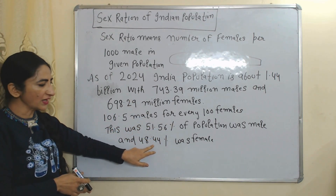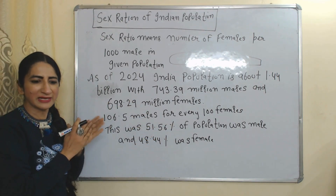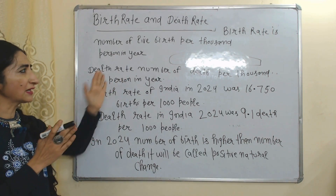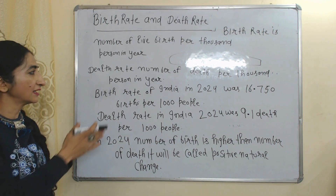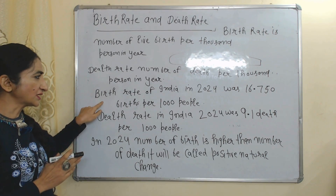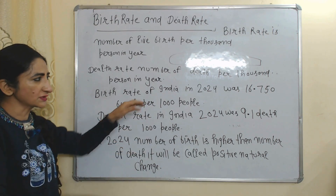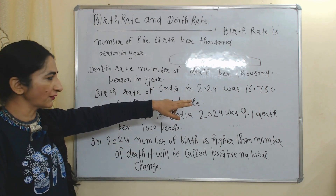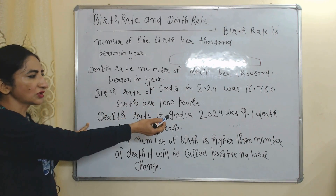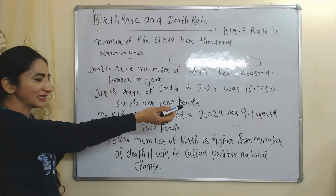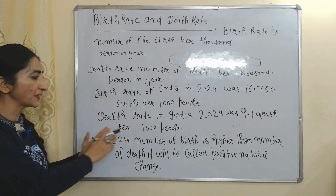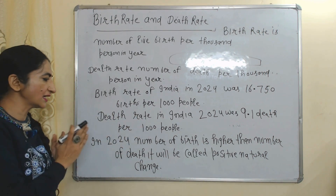The next feature is birth rate and death rate. Birth rate is the number of live births per thousand people in a year. Death rate means the number of deaths per thousand persons in a year. Birth rate of India in 2024 was 16.75 births per thousand people and death rate was 9.1 per thousand people, meaning there is a positive natural change.